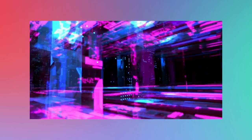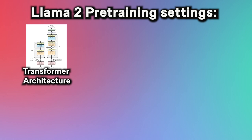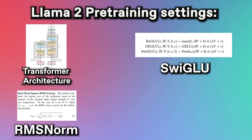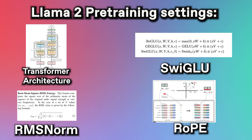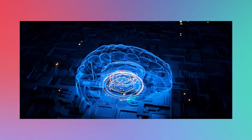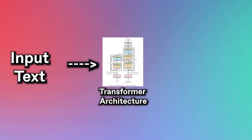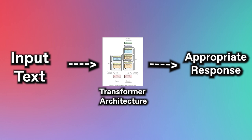Llama 2 shares much of the same pre-training settings and architecture as its predecessor, Llama 1. In particular, Llama 2 uses the standard transformer architecture, applies pre-normalization using RMS-Norm, uses SwiGLU as an activation function, and a relatively new encoding scheme called RoPE, or Rotary Position Embedding. That's a lot of big words, but here is a high-level breakdown.